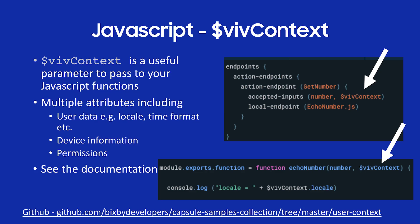Let's talk about vivContext. This is a really useful variable you can pass into your JavaScript functions. From vivContext you can get user data like locale, time format, device information, permissions, etc. In the endpoint get number example, I'm passing in a number and vivContext to echoNumber.js. In that code snippet, I'm passing vivContext into the JavaScript function and logging the user locale. There's example code on GitHub for how to use vivContext.